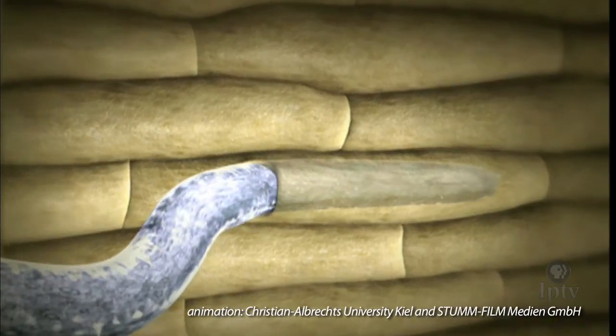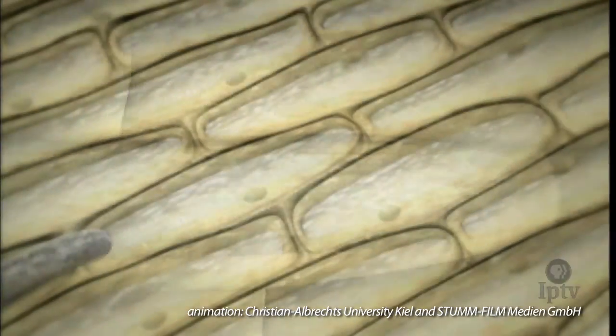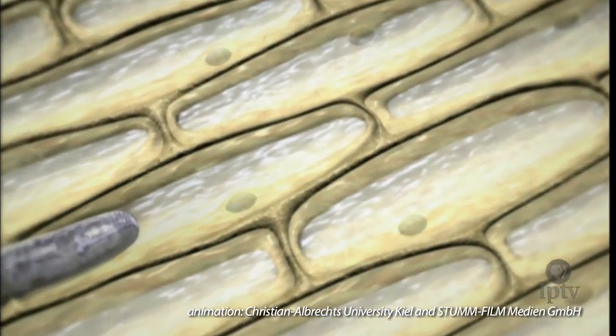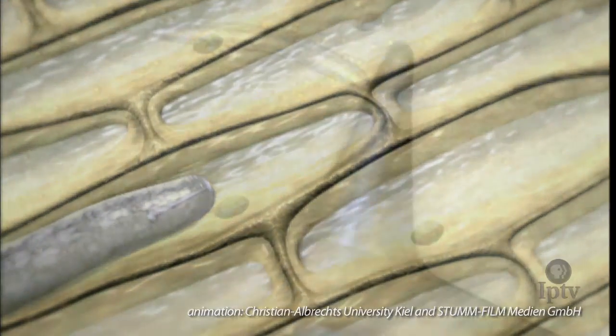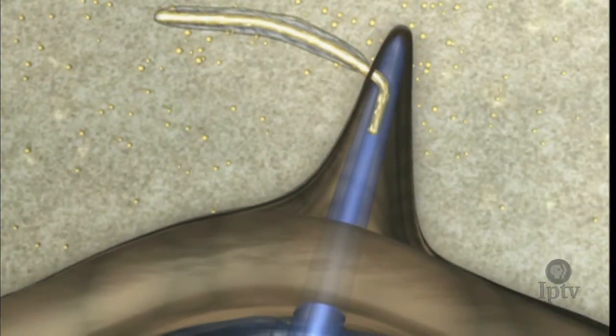The nematode needs to eat in order to grow, and it must get its food from the soybean. While some nematodes move through the plant eating cells as they go, the soybean cyst nematode prefers to have its food delivered.